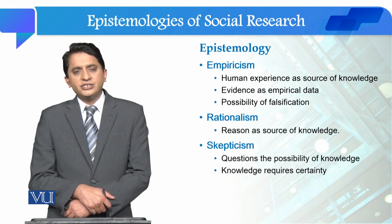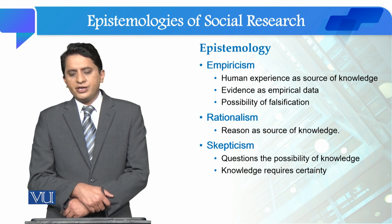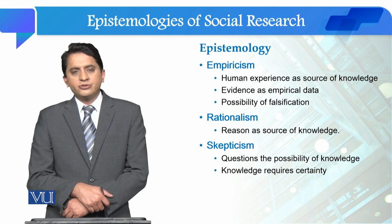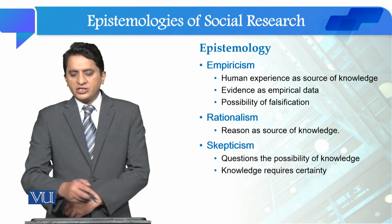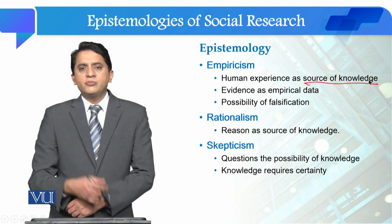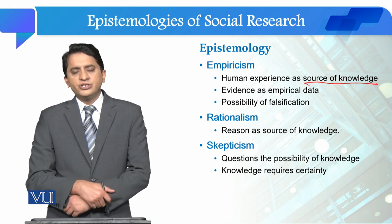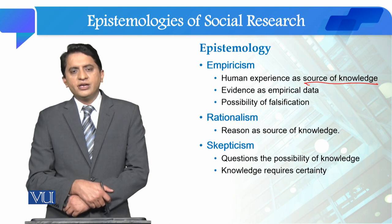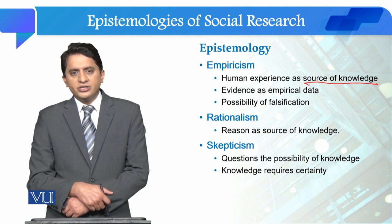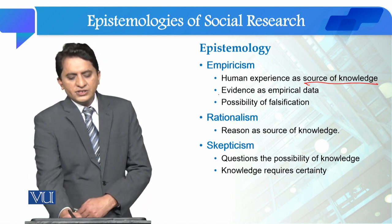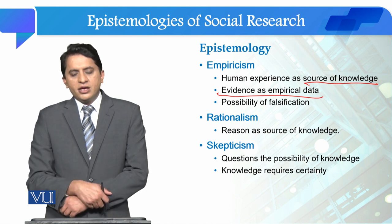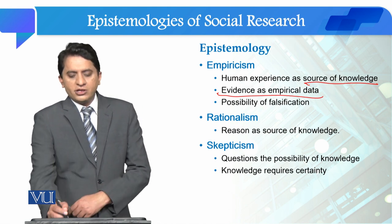If we talk about epistemology types, the first type is empiricism. In this type of epistemology, we talk about human experience and consider human experience as a source of knowledge. We value observation, and on the basis of observation we collect evidence, and when we analyze and synthesize the evidence, we produce knowledge. Evidence is something which is empirical, measurable, and there is the possibility of falsification as well.